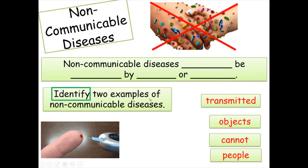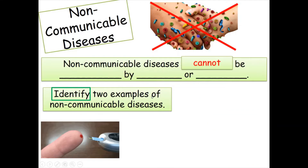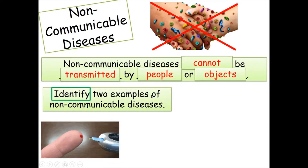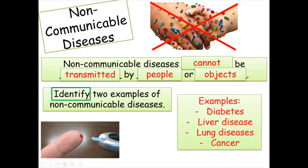Non-communicable diseases can't be transmitted by people or objects. Two examples of non-communicable diseases: we've got diabetes, liver disease, lung disease, cancer, heart disease — anything that cannot be transferred from person to person.